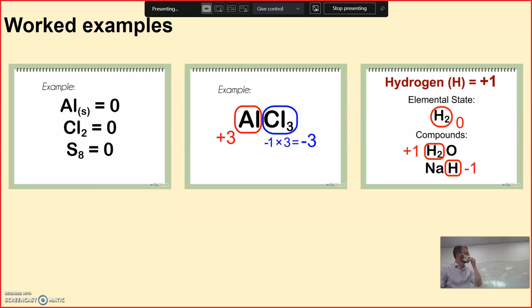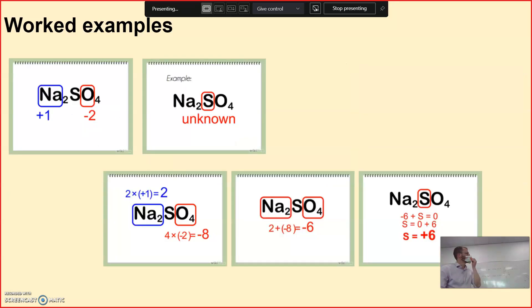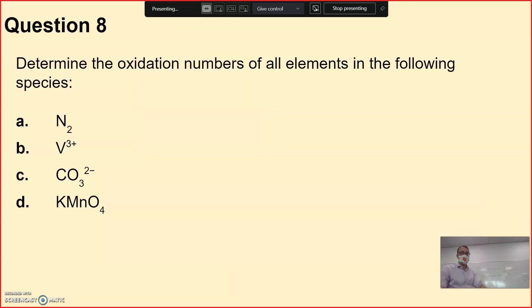In a compound, aluminum chloride. Aluminium is plus three. It's in group 13, gets rid of three electrons. Chloride is minus one. Hydrogen in hydrogen gas is zero. In water, it's plus one. In sodium hydride, it's minus one. Sodium sulfate. Sodium is plus one. Group one metal. Oxygen, it's not a peroxide, so therefore minus two. Four lots of minus two gives me minus eight. Take off two gives me minus six, so therefore sulfur must be plus six. Does that make sense? How we work that out?